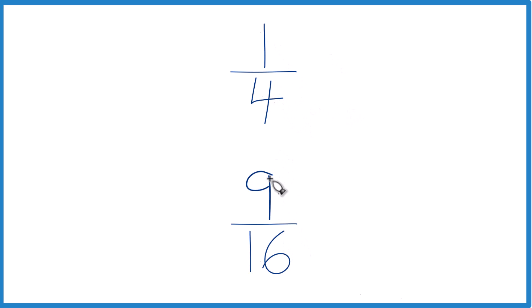The other way is to get a common denominator. Right now we have 4 and 16, but if we had the same denominator, we could just compare the numerators to figure out which one is bigger. So let's do that.